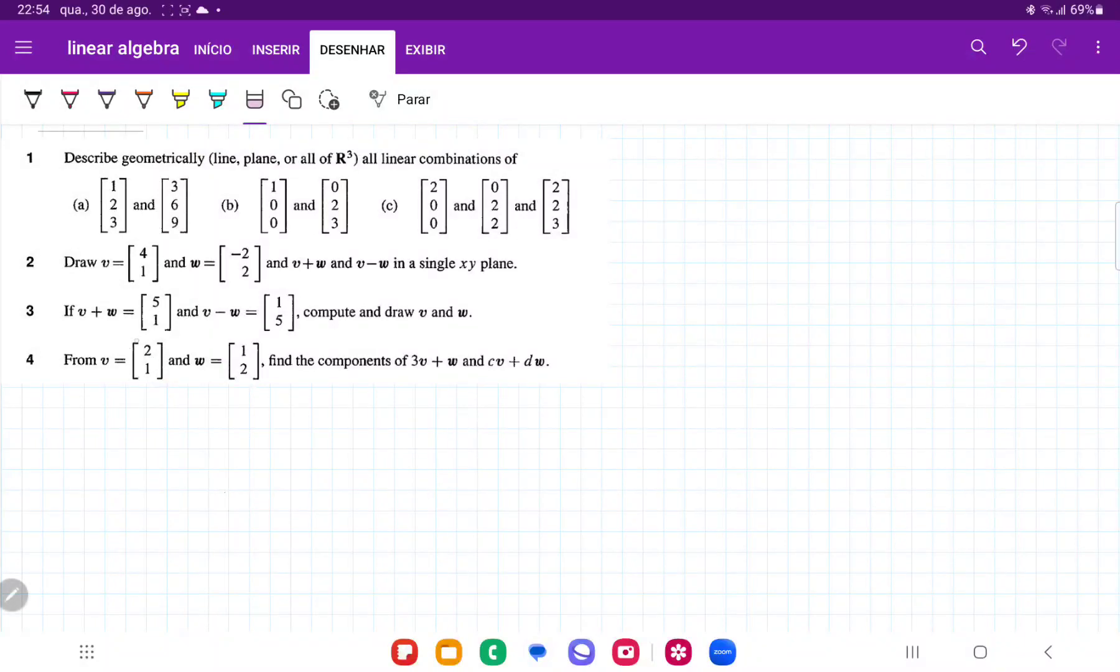So for number 4, we have that v is equal to the vector [2, 1], and w is equal to the vector [1, 2].